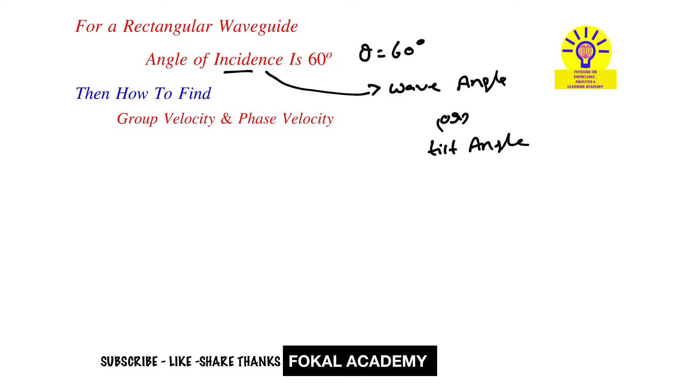What is phase velocity? It is the actual phase rate change, which is always greater than the velocity of light, denoted as vp. Now recall the relation between group velocity and angle of incidence.